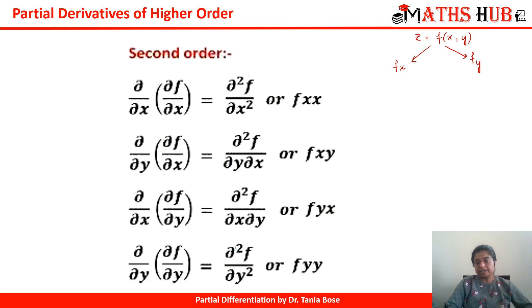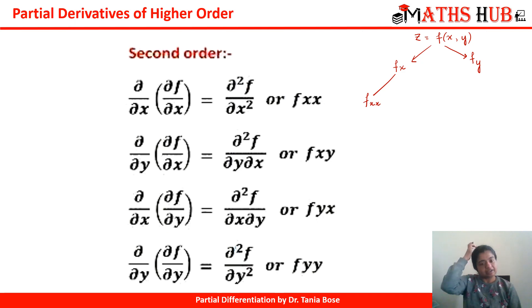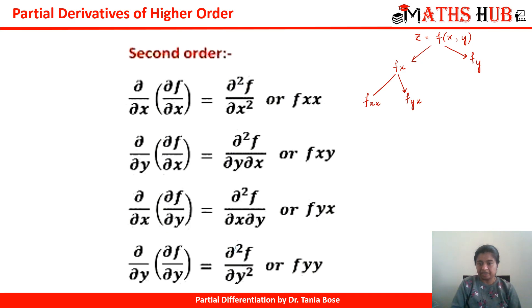Now similarly, we take the derivative of fx. It can be taken with respect to x again, giving f of xx. So f of xx is defined as ∂/∂x of (∂f/∂x), which equals ∂²f/∂x². Similarly, we can take the derivative of fx with respect to y, giving f of xy. So f of xy is ∂/∂y of (∂f/∂x) = ∂²f/∂y∂x.